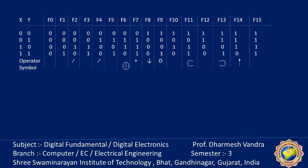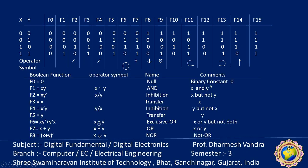It will be instructive to find out these functions and investigate their properties. A table shows the two variables x and y and the 16 possible functions from F0 to F15. Each function has its own assignment. F0 shows that for every combination the output is 0, so it is called binary constant 0 or null.